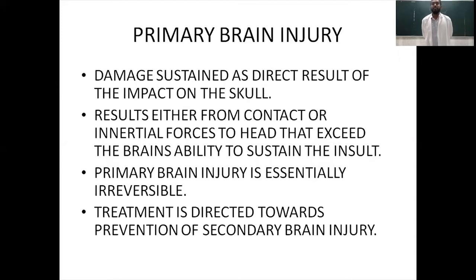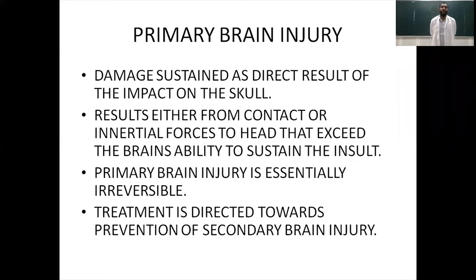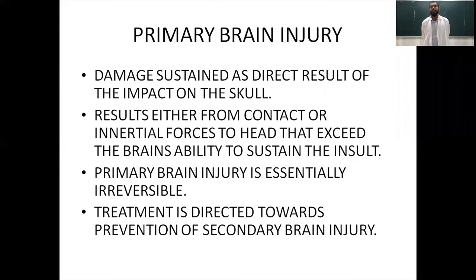What is primary brain injury? It is the damage sustained as a direct result of impact on the skull — resulting from contact or inertial forces that exceed the brain's ability to sustain the insult. Primary brain injury is essentially irreversible. It can only be prevented by encouraging the general population to wear helmets or seat belts and adhere to road traffic rules. Our treatment is therefore directed towards prevention of secondary brain injury.